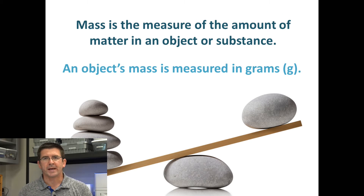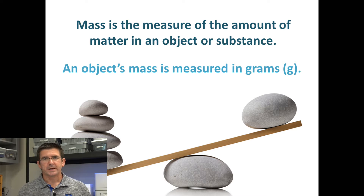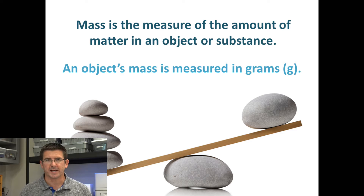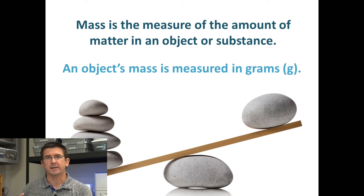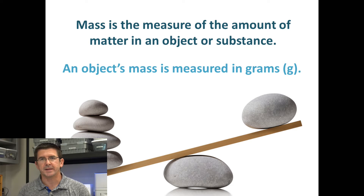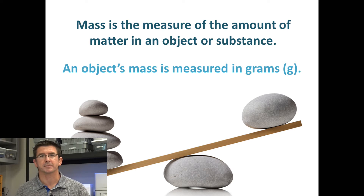When we talk about mass, we're just talking about the amount of matter that makes an object up. On the microscopic level, every piece of matter — whether it be a grain of sand, a speck of dust, an insect, our bodies, or the walls of this room — they're all made of tiny particles called atoms, and these atoms bond together to form molecules that make up everything around us.